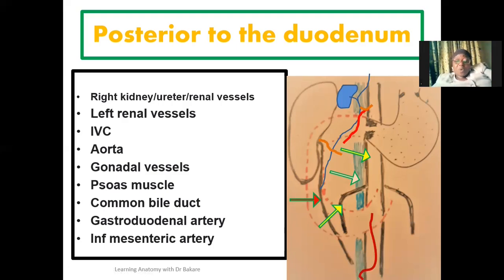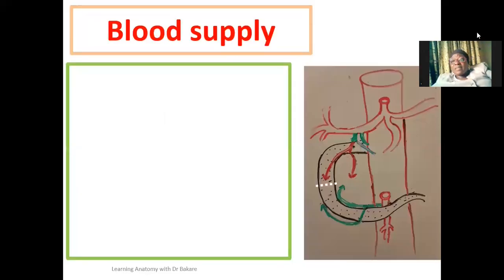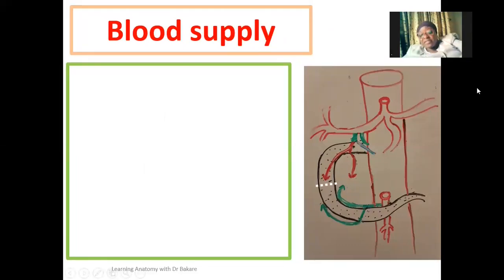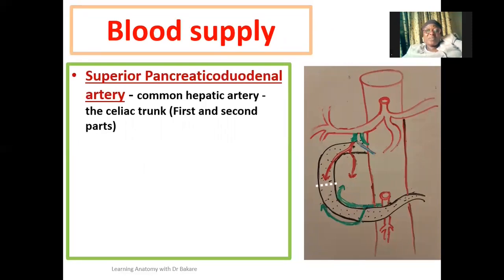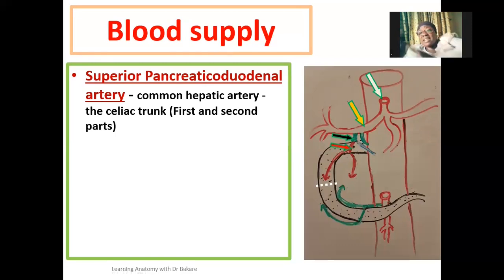Regarding blood supply, the different regions of the duodenum are supplied by different vessels. The superior part of the duodenum is supplied by branches from the celiac trunk. The celiac trunk gives the common hepatic artery, from which the gastroduodenal artery emerges. From the gastroduodenal artery we have the superior pancreaticoduodenal artery, which divides into anterior and posterior divisions to supply the first and second regions of the duodenum.